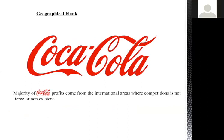In the flanking attack, we don't create demand — we fulfill the demand that has not been fulfilled by the competitor or market leader. There are two types: geographical flank and segmented flank. In a geographical flank, the company attacks in a market where the competitor is not present. For example, Coca-Cola has been expanding into areas where other companies are not present.